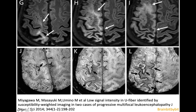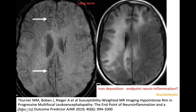In 2014, a Japanese group described low signal on susceptibility-weighted images in PML in the subcortical U-fibers that occurred in the course of the disease, which is probably an endpoint of neuroinflammation and caused by iron deposition.